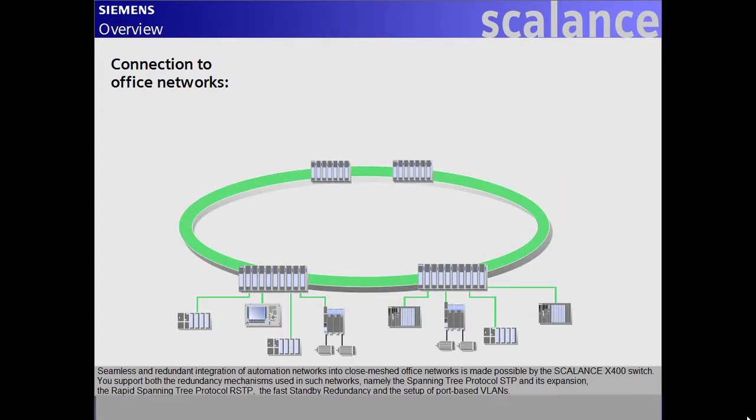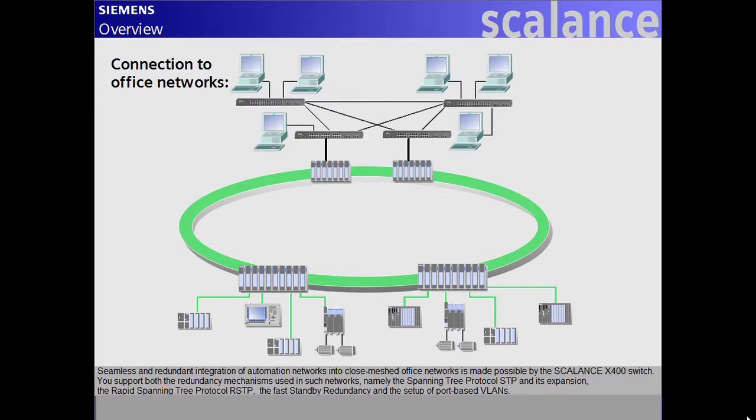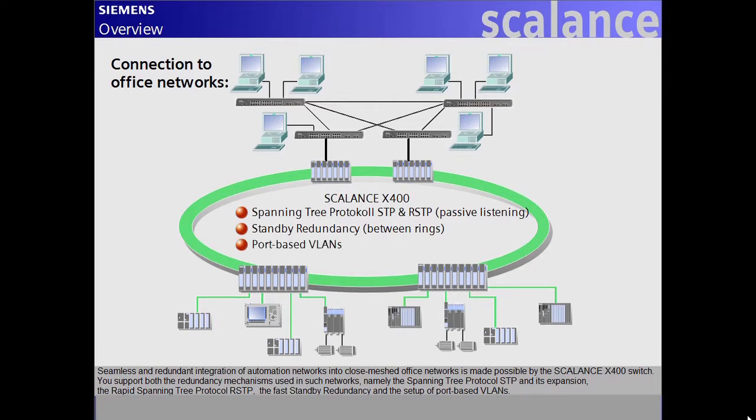Seamless and redundant integration of automation networks into close meshed office networks is made possible by the Scalance X400 switch. They support both the redundancy mechanisms used in such networks, namely the Spanning Tree Protocol STP and its expansion, the Rapid Spanning Tree Protocol RSTP, and the setup of port-based VLANs.